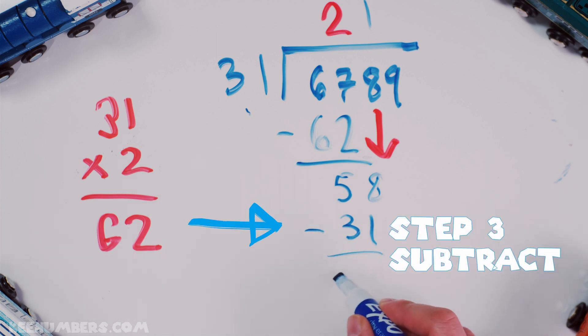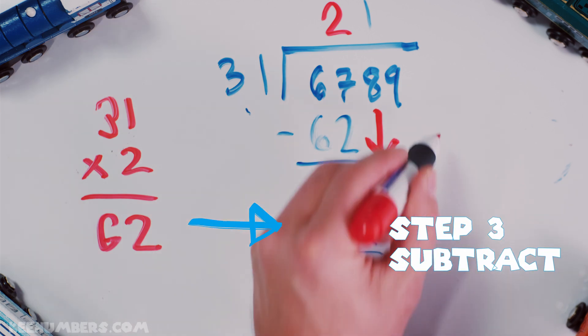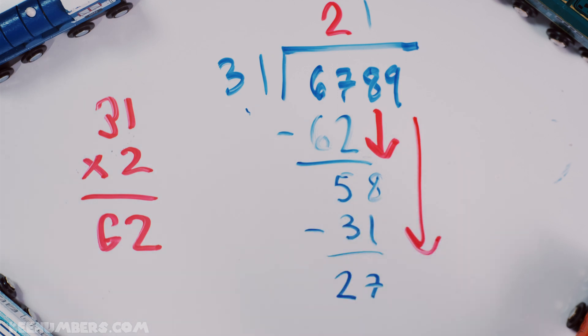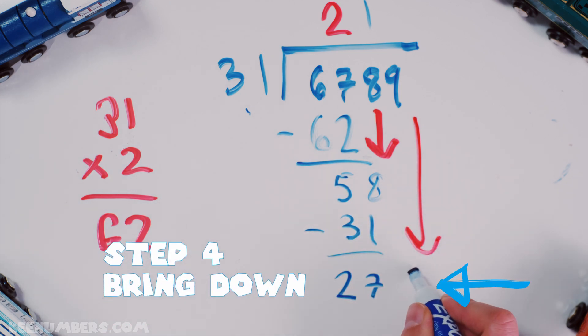Step 3, you're gonna subtract. And you have 27. And then, last but not least, step 4. You bring down that 9.